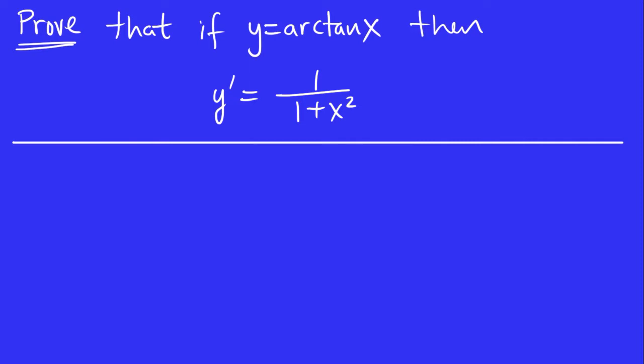You should try it. If you can't get it, I would give you a hint that we should use implicit differentiation somehow. And also we have to remember an identity, a trig identity that involves tan and secant. So I hope that hint might give you a clue what to do.